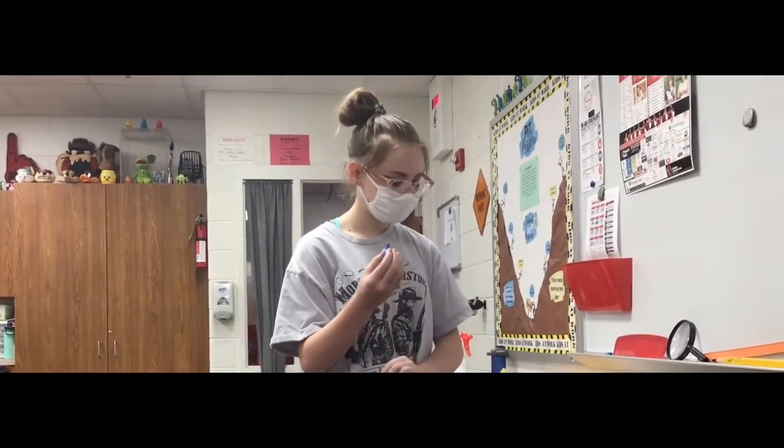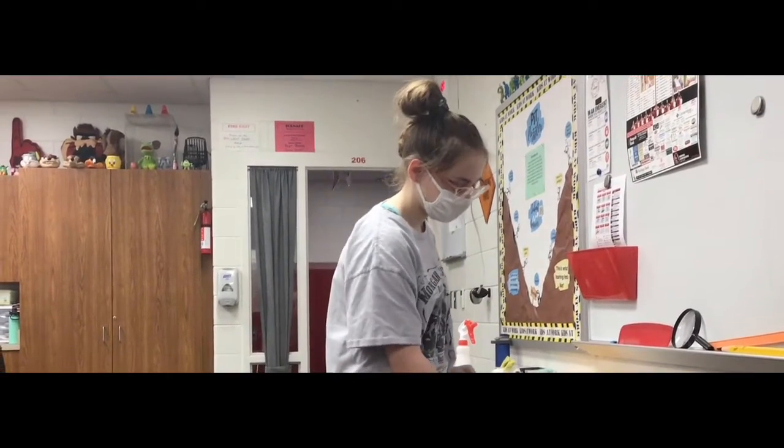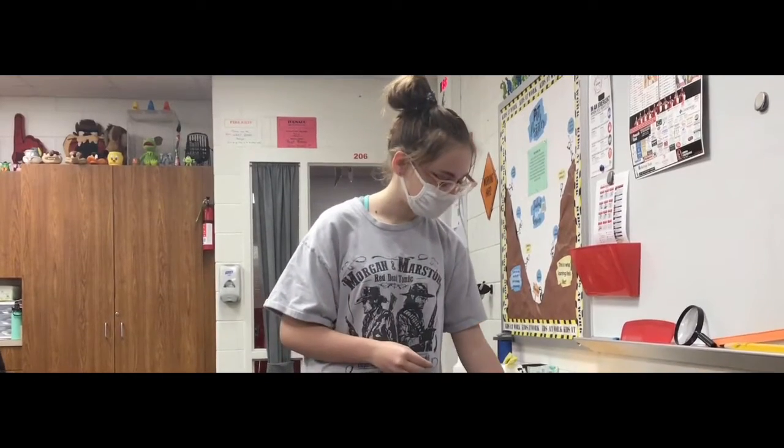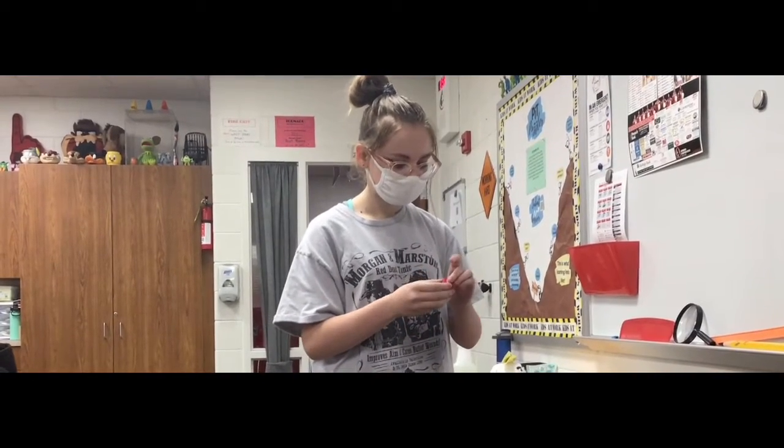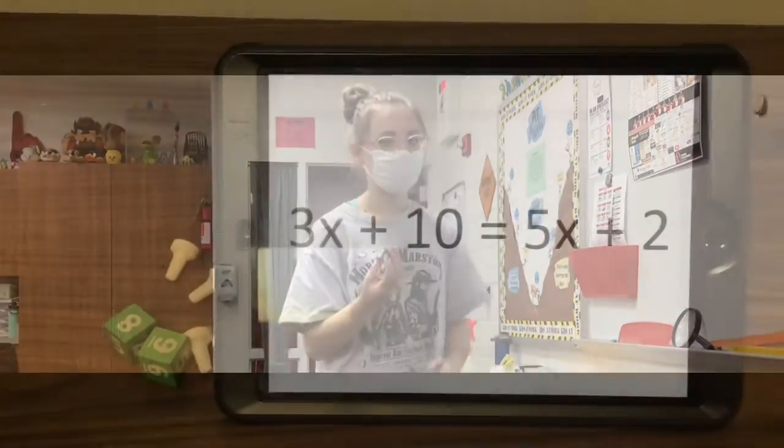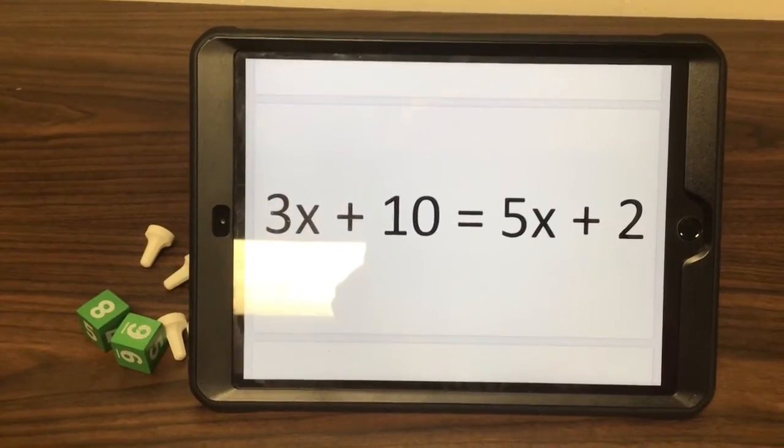Okay, so this is a blue exponent and it equals x. This is a y exponent and it's equal to the opposite of x. This is equal, this is positive constant, and this is a negative. The problem is 3x plus 10 equals 5x plus 2.